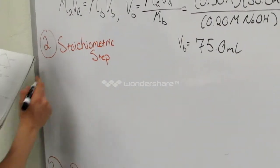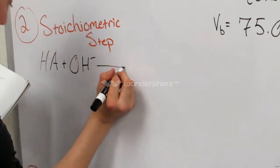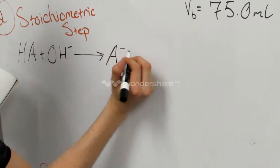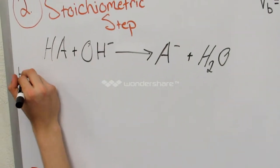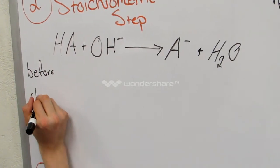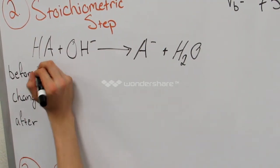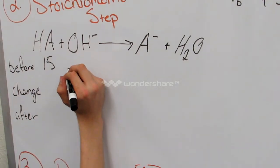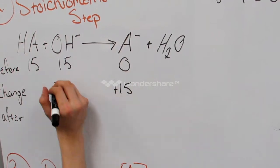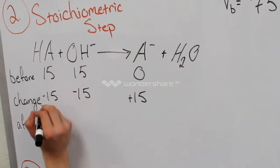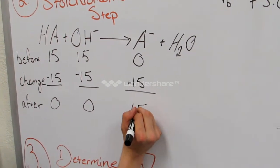Now we move on to the Stop portion of our mnemonic — the stoichiometric step. Remember the shorthand: HA is your weak acid plus OH-minus (strong base), one-way arrow because it is a strong base with a weak acid, yielding A-minus for your weak conjugate base plus H2O. This step uses Before, Change, and After — not Initial, Change, Equilibrium like the equilibrium step. For our numbers, you put molarity times volume to get millimoles: we have 15 for both sides since it is equivalent. You add to the right side and take away on the left, giving you 0, 0, and 15 millimoles of A-minus.